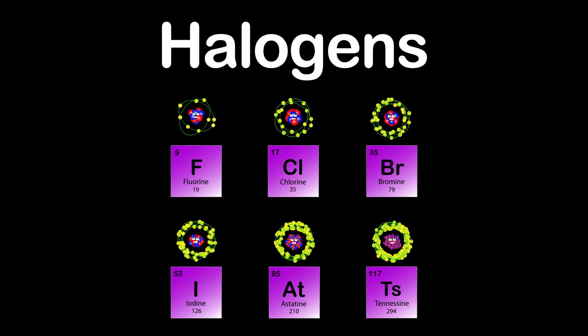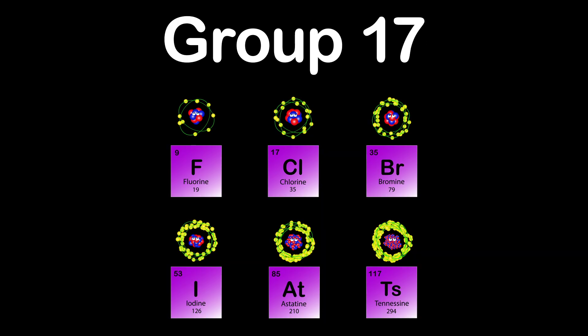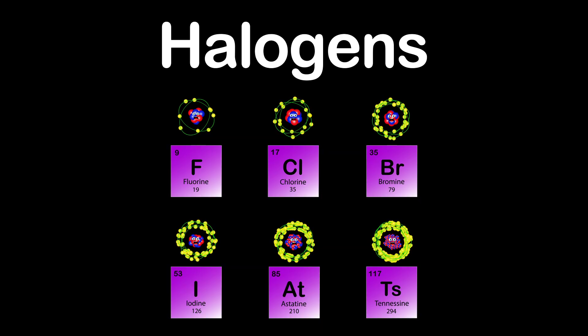We're the halogens of the periodic table, six elements in group 17, come sing if you are able. We're the halogens, non-metallic elements. Halogen means salt former.